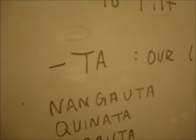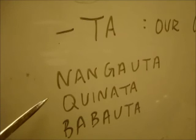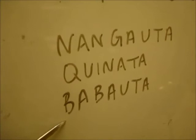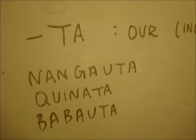We can see this Ta suffix in other Chamorro surnames such as Nanggauta, which is prominent in Malesso; Kinata, which is prominent in Umatac; and Babauta, which is very prominent in Agat but is also found in Malesso.